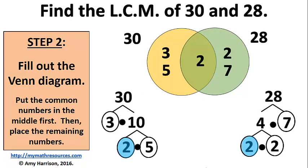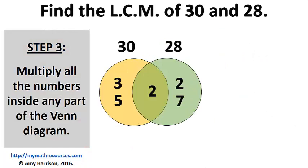For the third step, instead of just taking the middle number, we need to multiply all of the numbers that are anywhere in the Venn diagram. 3 times 5 times 2 times 2 times 7.